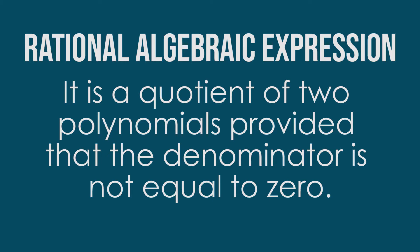A rational algebraic expression is a quotient of two polynomials, provided that the denominator is not equal to zero. Based on this definition, the numerator and denominator must both be polynomials. So we have here some restrictions — when can we say that an algebraic expression is a polynomial or not.